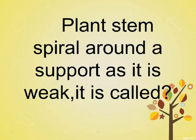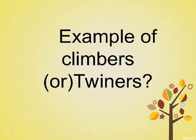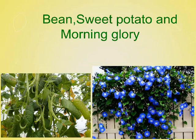Some plant stems spiral around a support because they are weak. These are called climbers or twiners. Examples of climbers or twiners include bean, sweet potato, and morning glory.